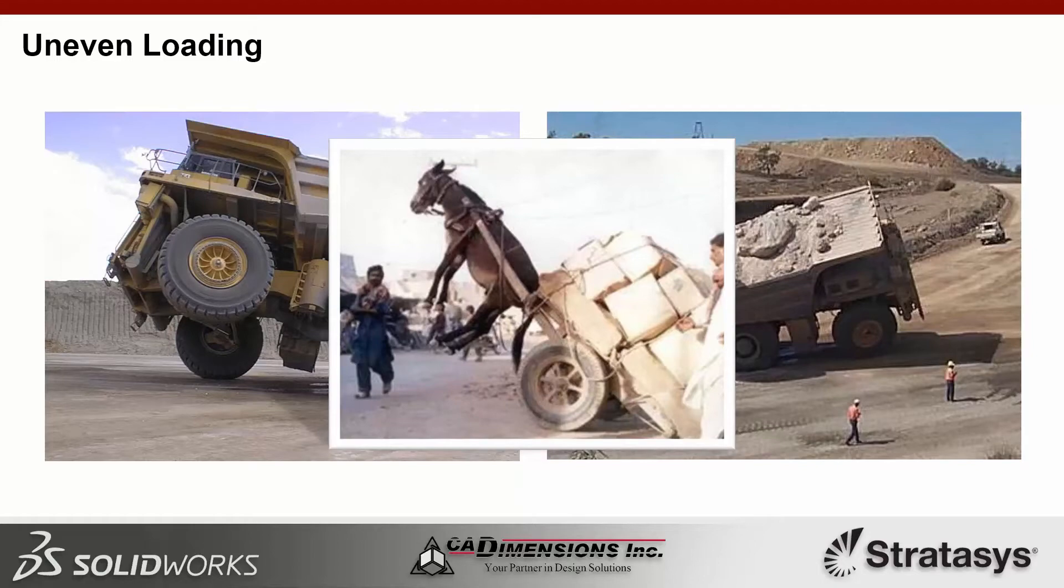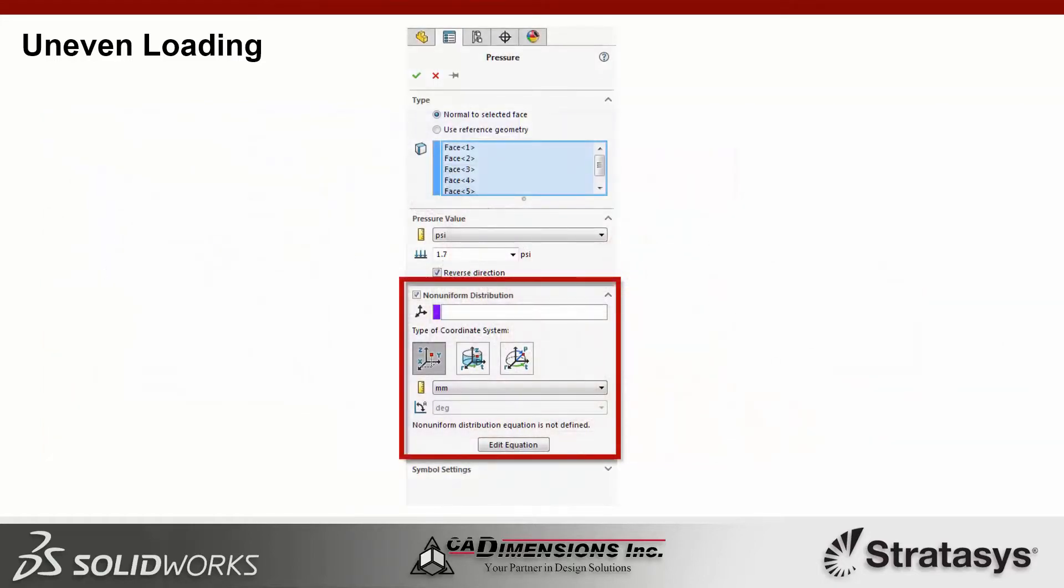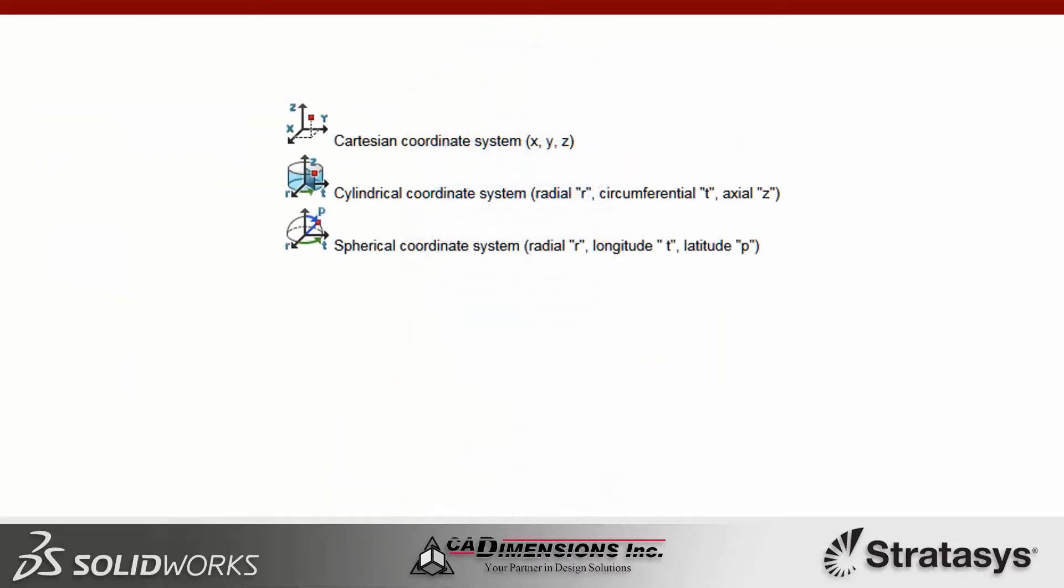SOLIDWORKS simulation has had the ability to distribute loads non-uniformly for quite some time now. Back in 2015, SOLIDWORKS revamped the interface for non-uniform distribution of loads and added the ability to use spherical and cylindrical coordinate systems in addition to standard Cartesian coordinate system.